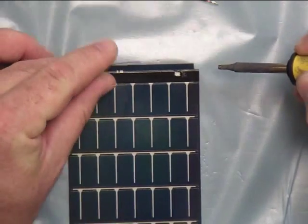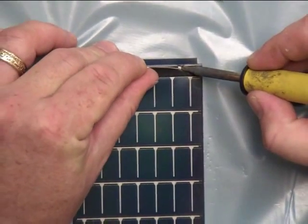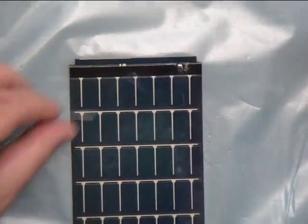Again, a scrape back. Expose the silver underneath. A little solder in there. Pull the solder dot.